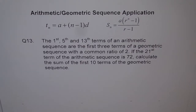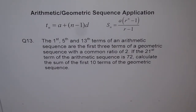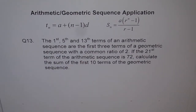Question 13. It is a combination of arithmetic and geometric sequence. We have already given formulas on the top which we need to use — one is the arithmetic sequence general term and the other is the sum of a geometric sequence. The question is: the first, fifth, and thirteenth terms of an arithmetic sequence are the first three terms of a geometric sequence, with a common ratio of 2. If the 21st term of the arithmetic sequence is 72, calculate the sum of the first ten terms of the geometric sequence.